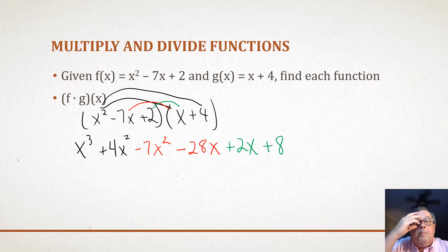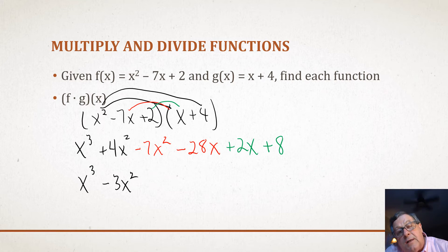Now I need to combine like terms. I've got an x³. Then I've got +4x² - 7x², so that's going to be -3x². And then we've got -28x + 2x, and that's going to be -26x.